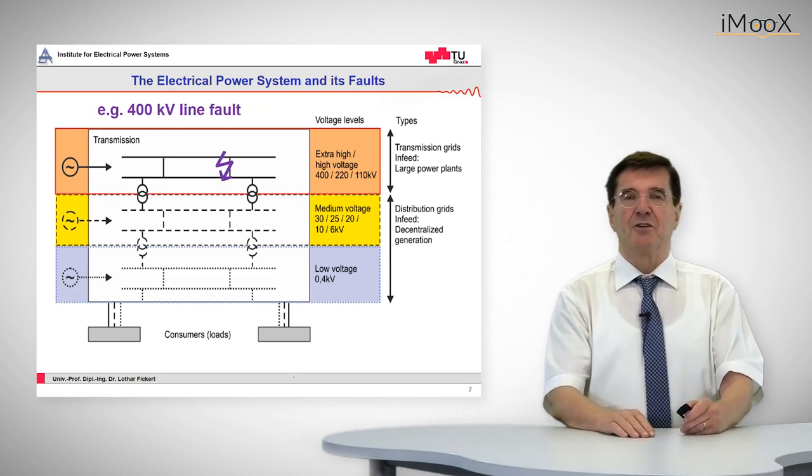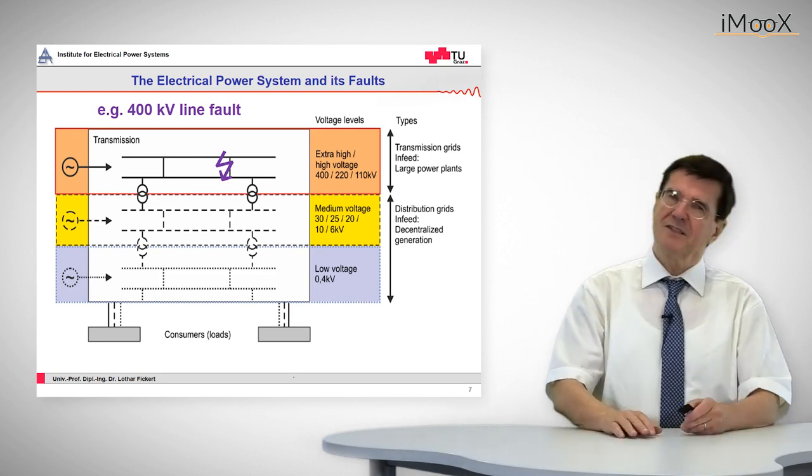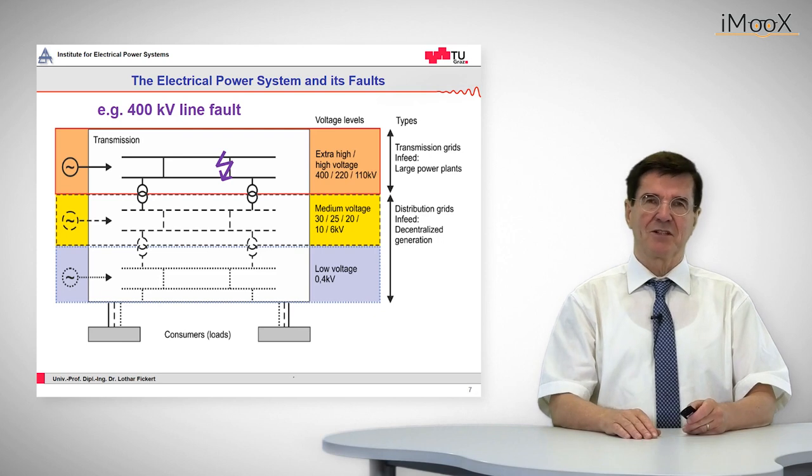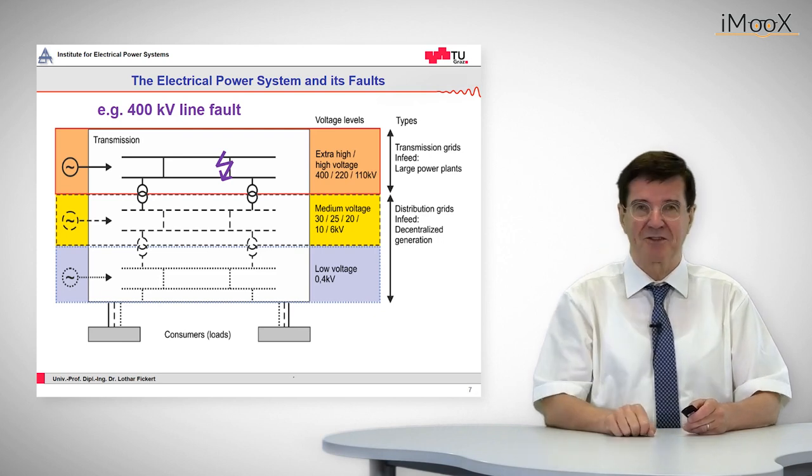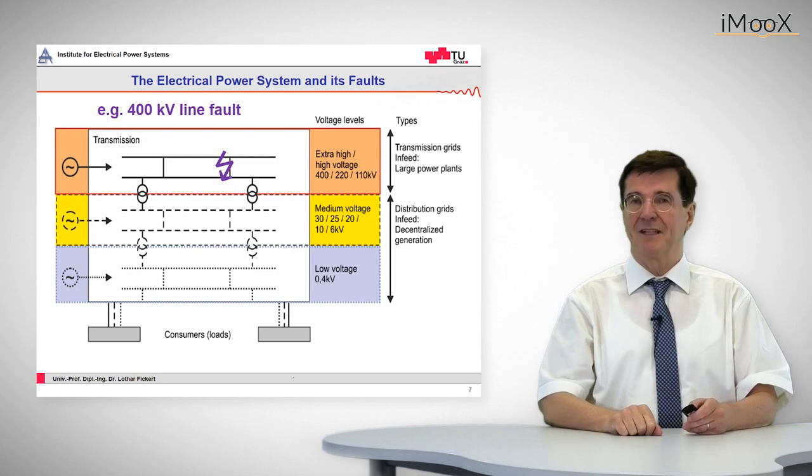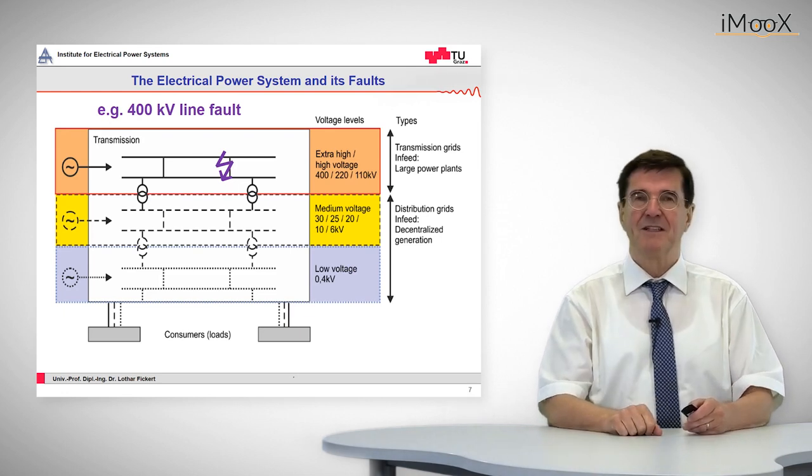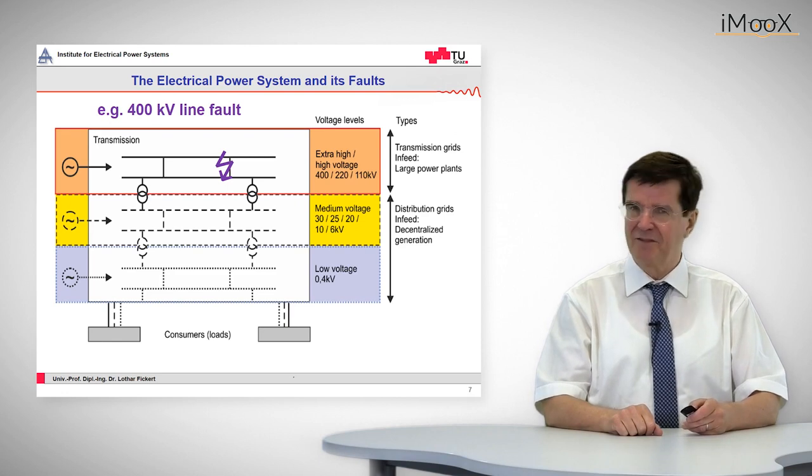Faults can also occur on 400 kV lines, but that is not so severe to the electrical power system because these lines usually come in pairs of two. If one line trips out, the other line will take over the load, and the transport of electrical power is not afflicted in a very severe way.